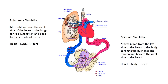Pulmonary circulation moves blood from the right side of the heart to the lungs for reoxygenation and then returns it back to the left side of the heart. This is a heart-lungs-heart pathway. Systemic circulation moves blood from the left side of the heart to the body to distribute nutrients and oxygen and back to the right side of the heart. This is a heart-body-heart circulation.